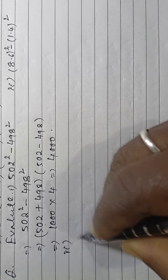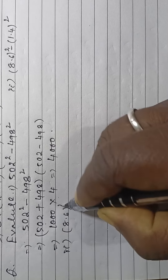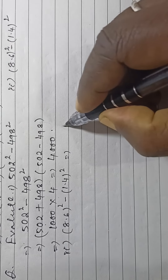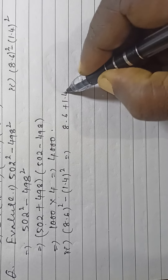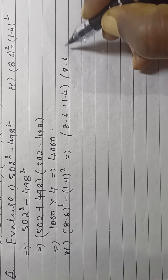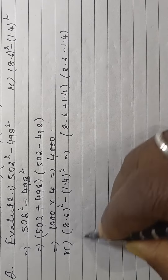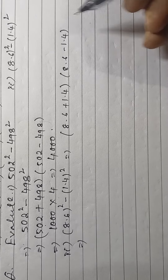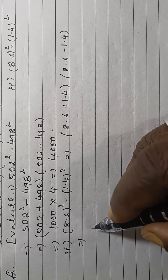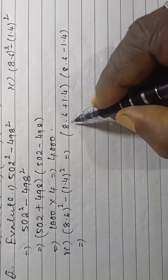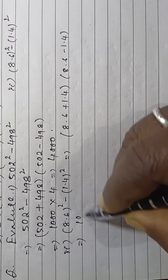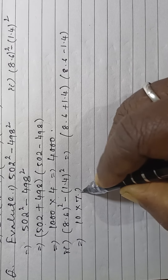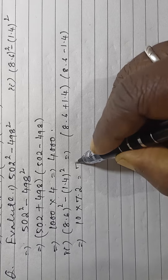For the second part, 8.6 square minus 1.4 square equals (8.6 + 1.4) into (8.6 - 1.4), as per the identity a square minus b square equals (a + b) into (a - b). Here 8.6 plus 1.4 is 10, and 8.6 minus 1.4 is 7.2, so the answer is 72.